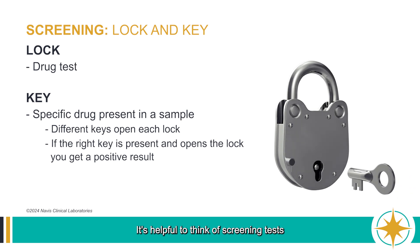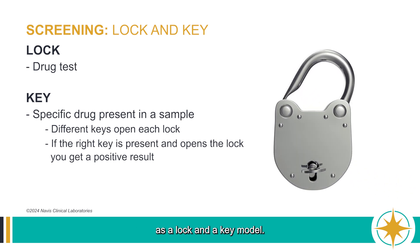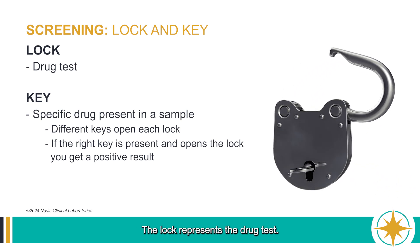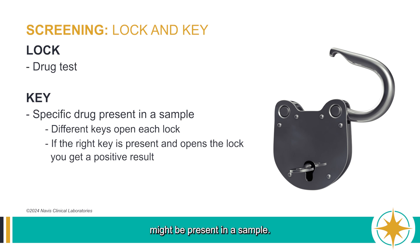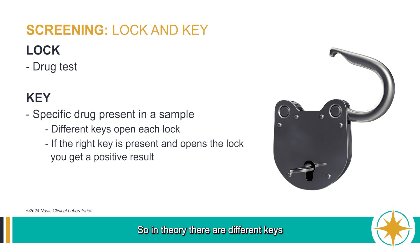It's helpful to think of screening tests as a lock and key model. The lock represents the drug test. The key represents the specific drug that might be present in a sample. These tests are designed to identify a broad range of both prescription and illicit drugs, so in theory, there are different keys that can open each lock.